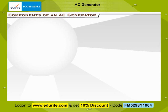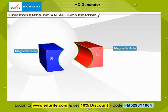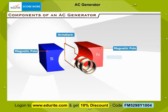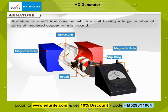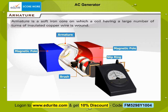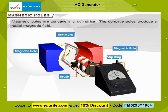Components of an AC generator: An AC generator consists of a magnet with concave cylindrical poles, an armature, and a current collecting arrangement consisting of slip rings and brushes. The armature is a soft iron core on which a coil having a large number of turns of insulated copper wire is wound. The magnetic poles are concave and cylindrical, and the concave poles produce a radial magnetic field.